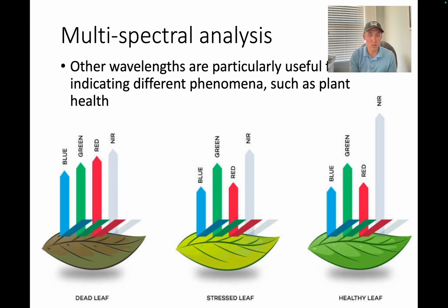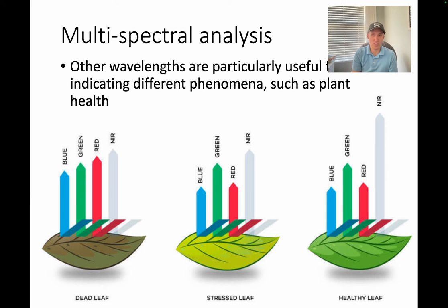For example, we can look at plant health using different wavelengths. The colors here represent the different wavelengths — blue, green, red, and near-infrared (NIR). The reflectance, the length of those colored lines, is the reflectance from each one of those leaves. The reflectance is different depending on whether you have a dead leaf, a stressed leaf, or a healthy leaf. A healthy leaf is going to absorb a lot of radiation in red and blue, and reflect a lot in green and near-infrared wavelengths. Whereas a dead leaf will have a more uniform reflectance across all those wavelengths.